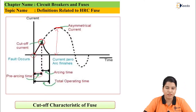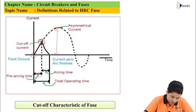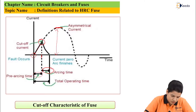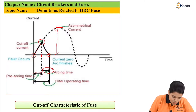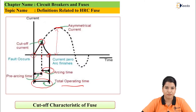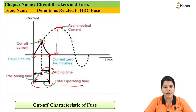This is the pre-arcing time — that is the time between commencement of fault up to the cutoff. This is the arcing time — that is the time from cutoff to the current zero position. The addition of the arcing time and pre-arcing time is the total operating time. This point shows the current zero where the arc is finally finished.